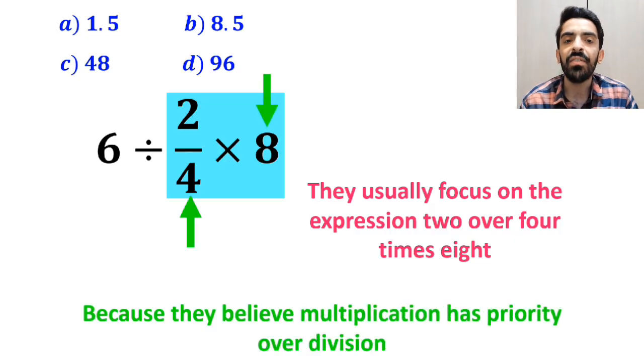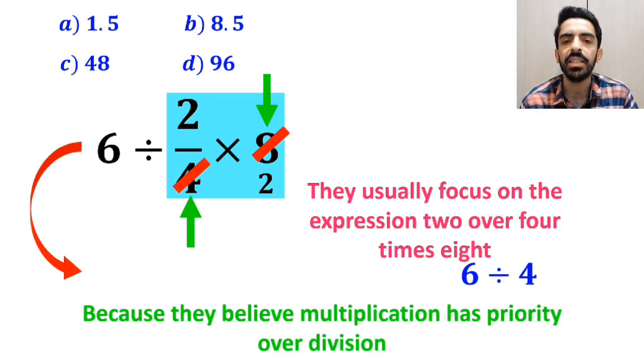As you can see in the image, they very easily cancel out 8 with the 4 in the denominator, and rewrite this expression as 6 divided by 4, which ultimately gives them the answer 1.5.